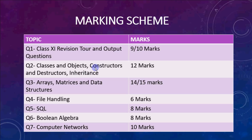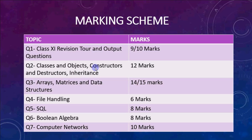Question number three covers arrays, matrices, and data structures and has five parts — A, B, C, D, E. Part A requires writing a function where you receive an array as an argument and work on it. Then there's a question involving a matrix where you have to write code on the matrix.